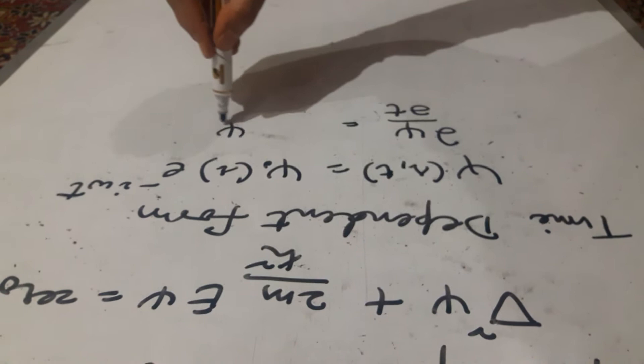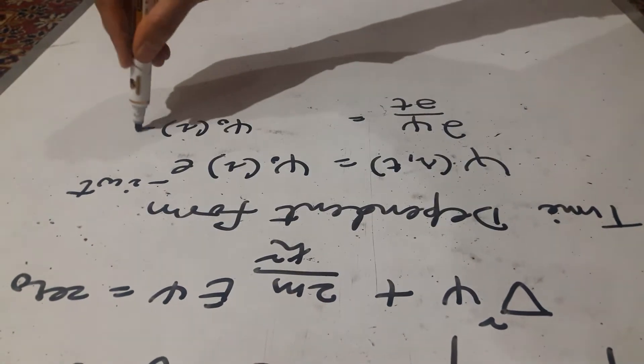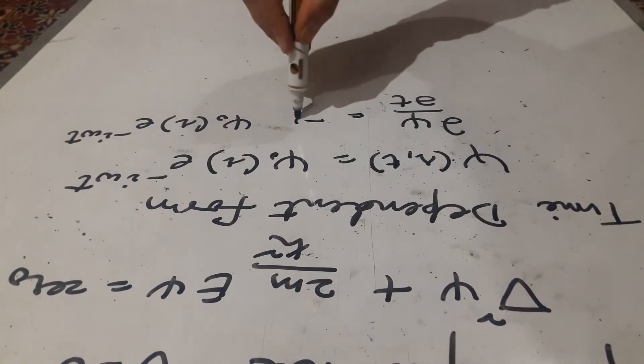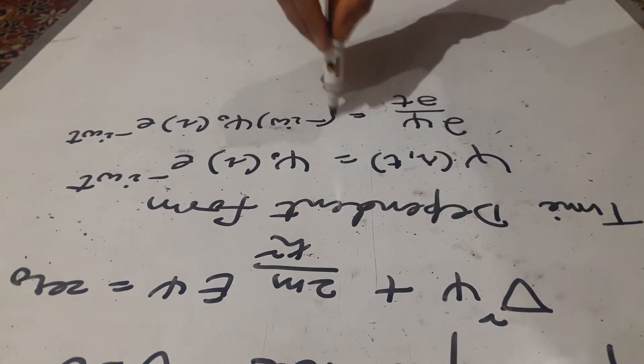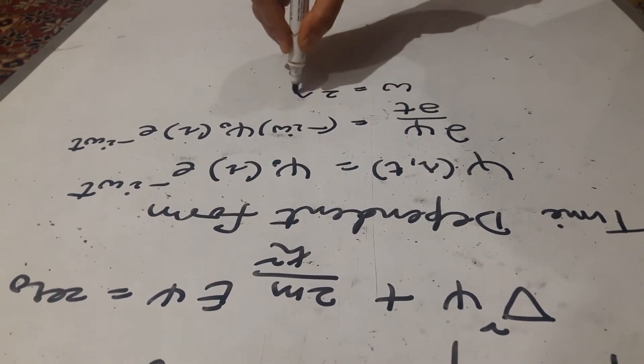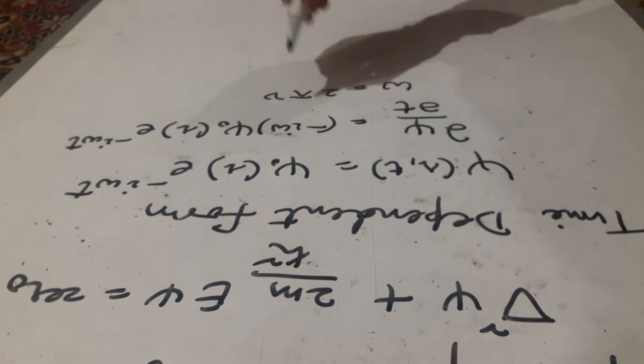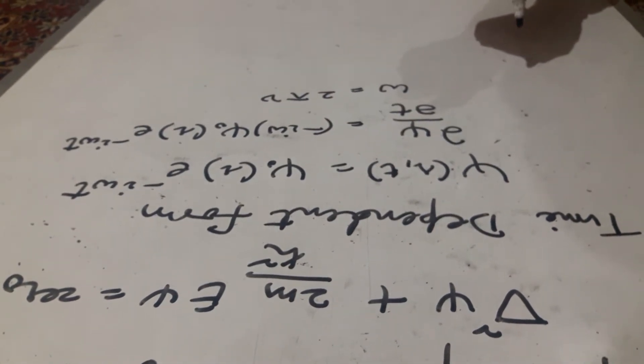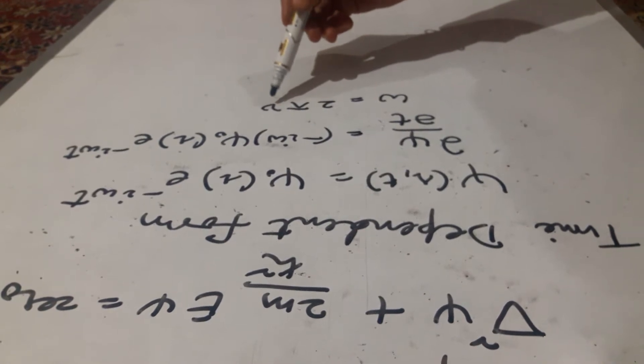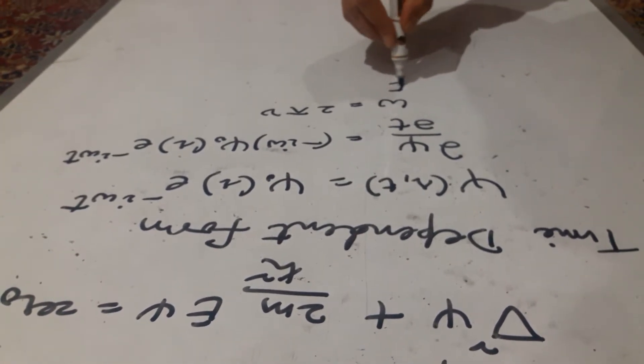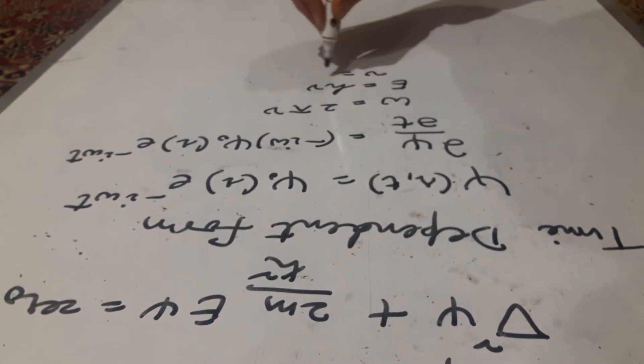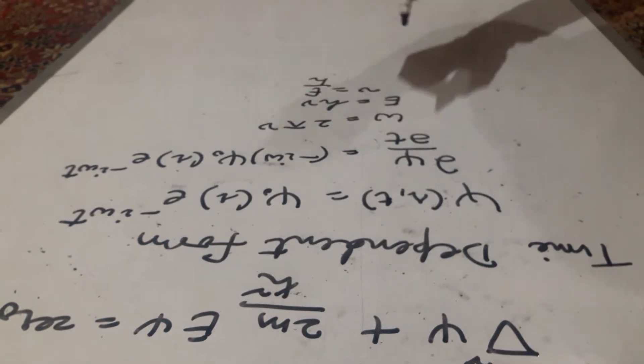For this, we have made the substitution of u by lambda. Here we will put it as this: E is equal to h nu, and nu is equal to e by h. Let us put that here.